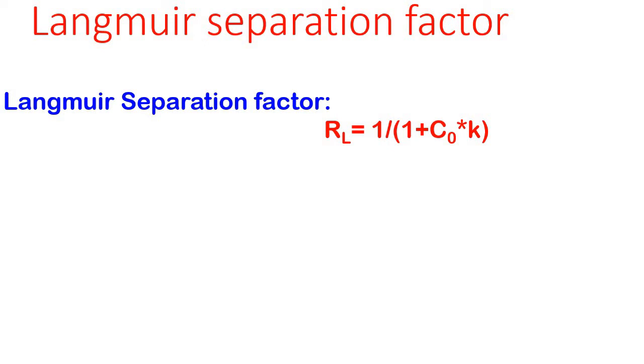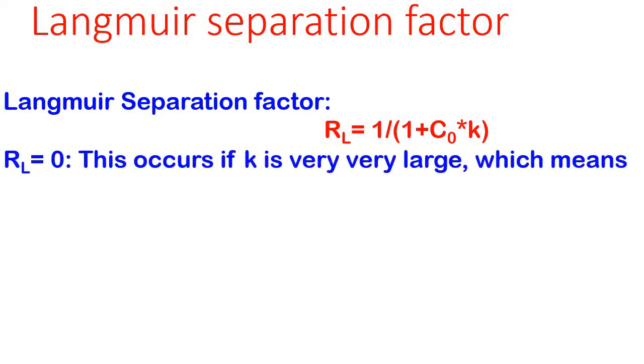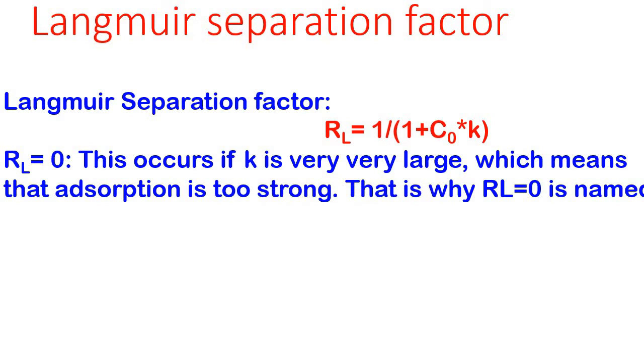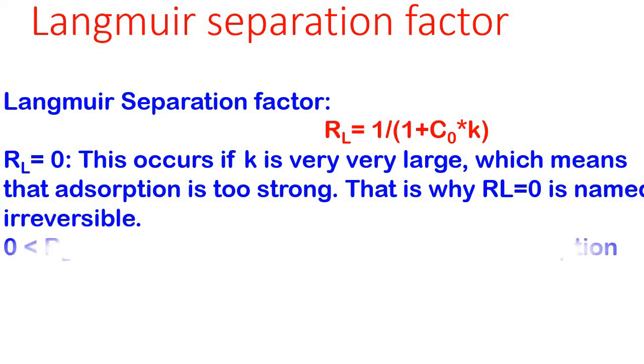And for RL equal to 0, then K is very very large, which means that adsorption is too strong. That's why RL equal to 0 is named irreversible adsorption.